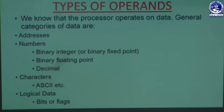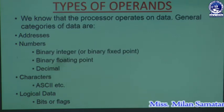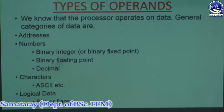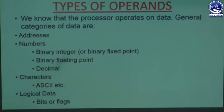For example, when we enter capital A, the system encodes it into its ASCII value, which is 65. That is predefined for the system. For small 'a', the ASCII value is 97. Like this, for every character there is an ASCII value which is the numeric value for that character. The last category is logical data, which means bits or flags. These bits and flags are boolean variables which can store only two values — either 0 or 1.